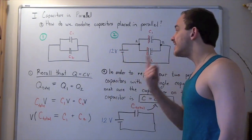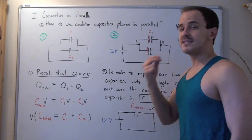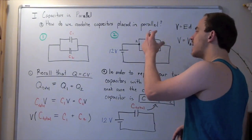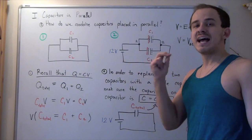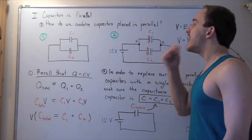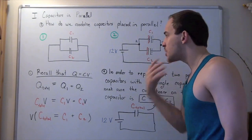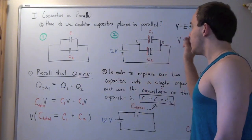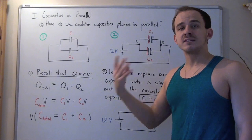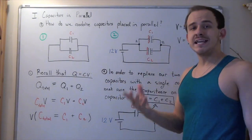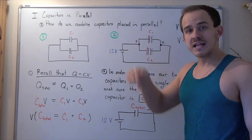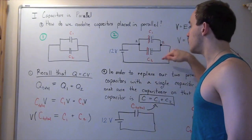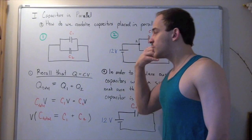Now let's try to find a single capacitor that has a capacitance equal to these two capacitors. In other words, we want to replace these two parallel capacitors with a single capacitor that has an equivalent capacitance, and this will allow us to find the amount of charge that flows through our circuit. We just said charge is conserved: the charge flowing into node B equals Q1, the charge that goes up into C1, plus Q2, the charge that goes down into C2.